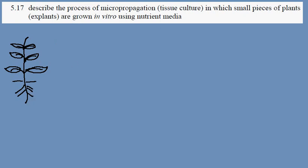Instead, we have to use a cloning technique called micropropagation. We begin by taking tissue from the shoot tip or the root tip.